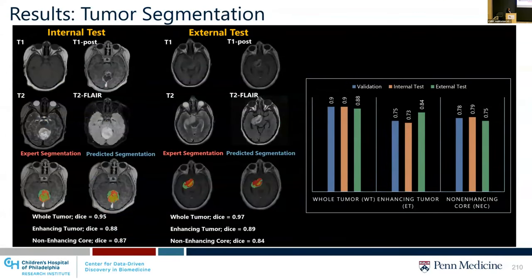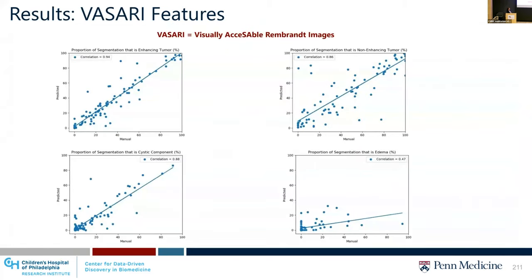The performance of brain tumor sub-region segmentation shows a high Dice score, which is a measure of model performance. This was reproduced in the internal test set, which was kept unseen during model training, and on the external test set acquired from centers other than CHOP. Example cases from internal and external test sets show high performance compared to expert segmentation. We also show agreement between WASARI features — commonly used in radiology for evaluating the volume of tumor sub-regions such as enhancing tumor, non-enhancing tumor, and cystic component — where the predicted model and manual segmentation agree very well with high correlation.